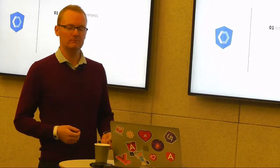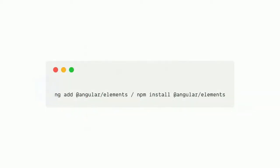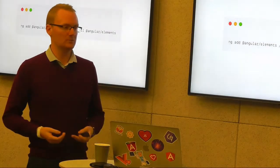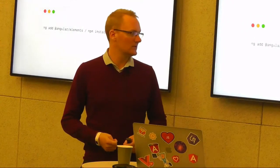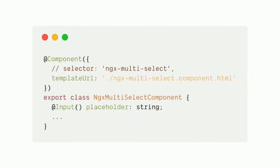The steps for Angular Elements are: install the package, create your component, then register it as a custom element. Installing is easy with the CLI: run 'ng add @angular/elements' and it sets up the package and includes polyfills. You can also npm install it manually and handle polyfills yourself. Then you need a component - here's a simple Angular component with an Input for placeholder. Notice I've commented out the selector, because we're going to register it as a web component and want to avoid naming conflicts.